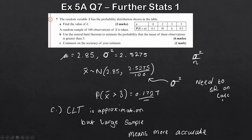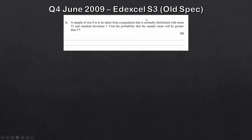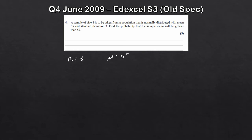That was the first question — 9 marks in total, a pretty standard exam question from the new Further Stats 1 exams. Now let's move on to the next one, taken from the old Edexcel S3 — the old spec. This is quite a straightforward one: we're given a sample of size n = 8, mean mu = 55, and standard deviation = 3, so the variance is 9.